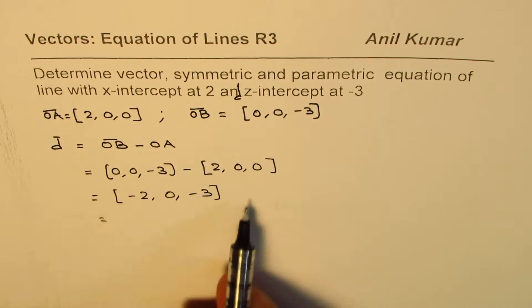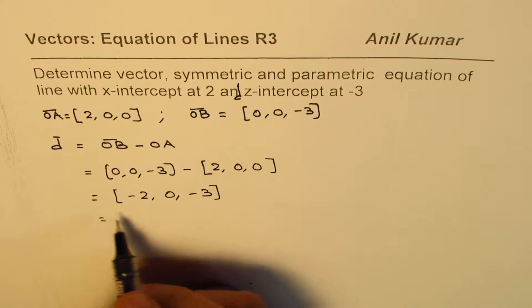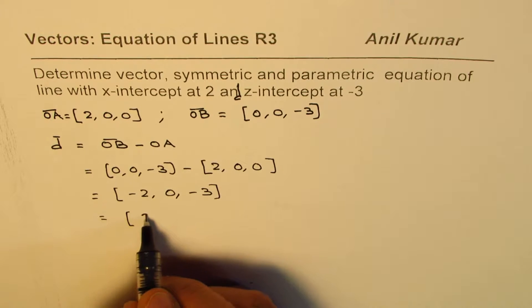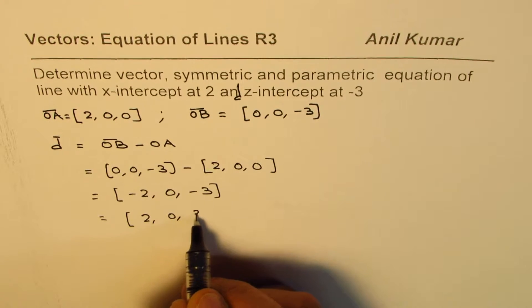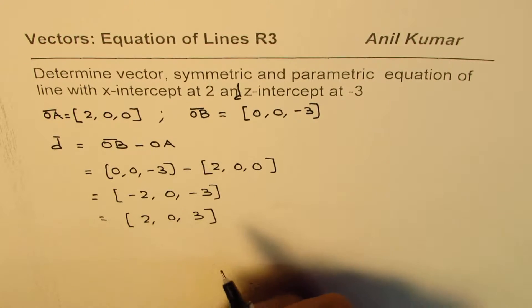it is important to see that we could have written this with minus outside. So, I could have written the direction as (2, 0, 3), right? Both are same directions.